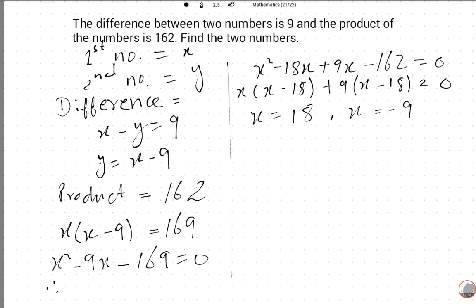So this is neglected. The first number is equal to X which is 18, and the second is X minus 9, so 18 minus 9 is equal to 9. So this is the required answer.